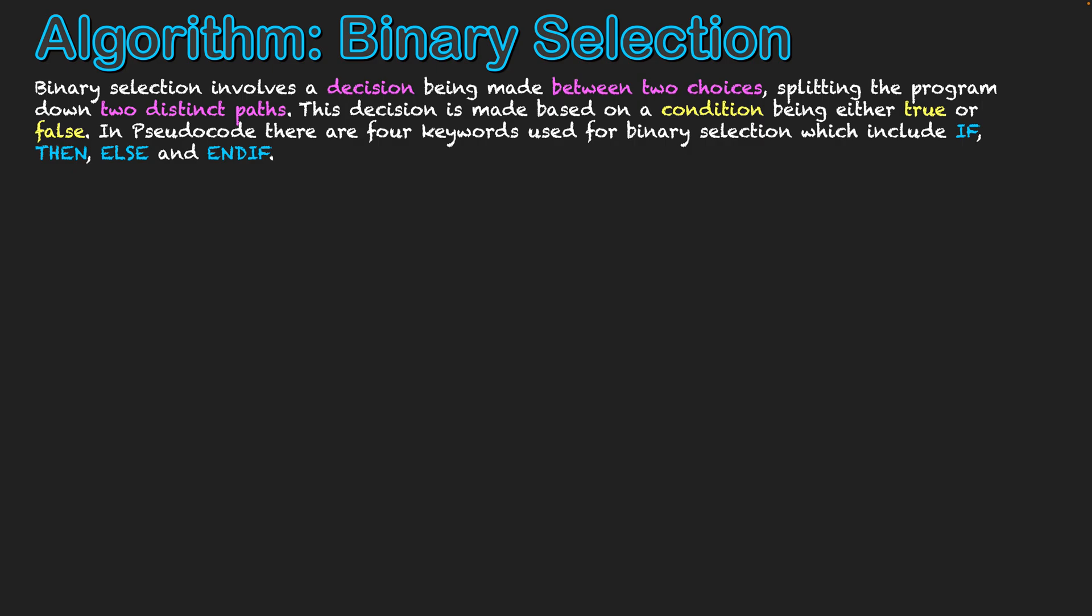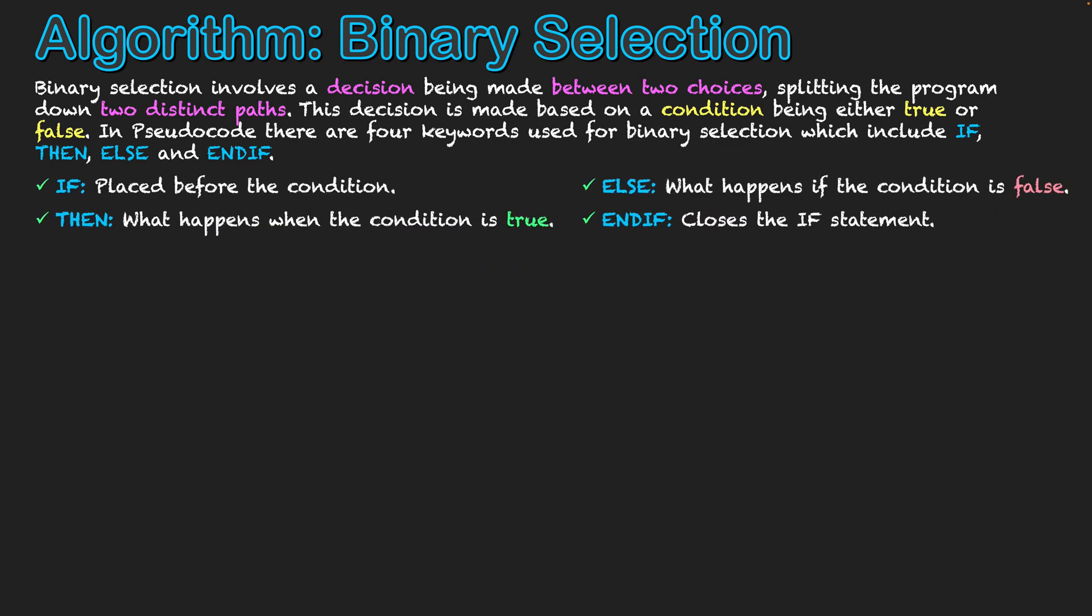In pseudocode, there are four keywords used for binary selection which include if, then, else, and endif. Firstly, it all starts off with if, which is placed before a condition and is accompanied by the criteria that says what makes the condition either true or false.